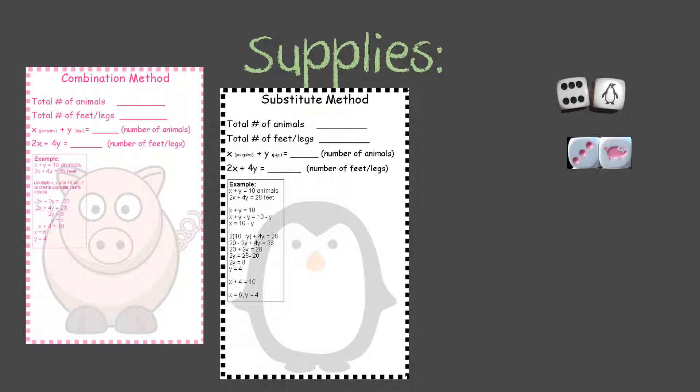The supplies that are provided on the sheet, along with your information guide and directions, will be two boards, one with a pig on it, one with a penguin on it, and then two dice. One that has pigs on them that are pink, and one that has penguins on them that have black numbers.